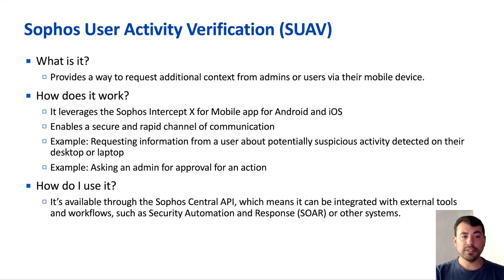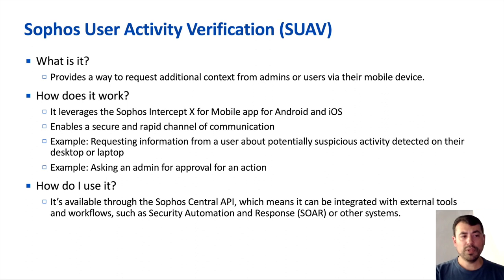What can we do with this? We can request information from a user about potentially suspicious activity detected on their machine, or we can ask an admin for approval for a specific action before we actually allow that action to happen. It's available through the SoPos Central API, meaning it can be integrated with external tools and workflows such as SOAR tools, and we'll be looking at one of SoPos's SOAR tools in the demo portion.